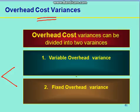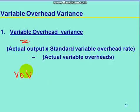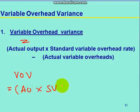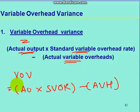We will see the formulas of the variable overhead variance. Variable overhead variance is equal to actual output into standard variable overhead rate minus actual variable overhead.